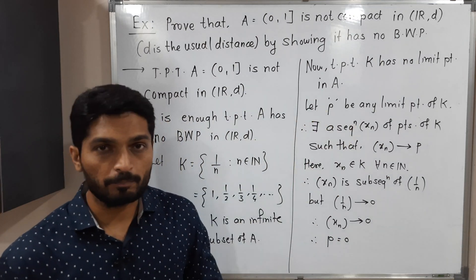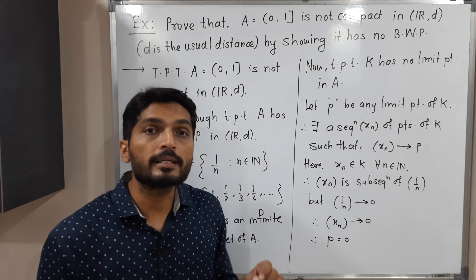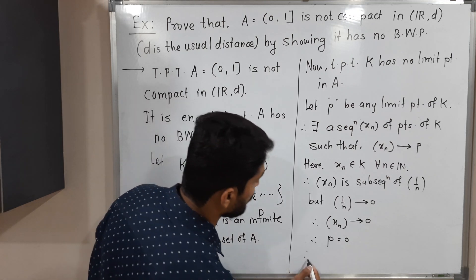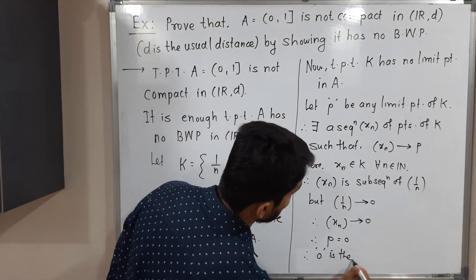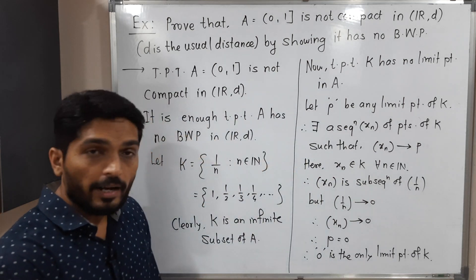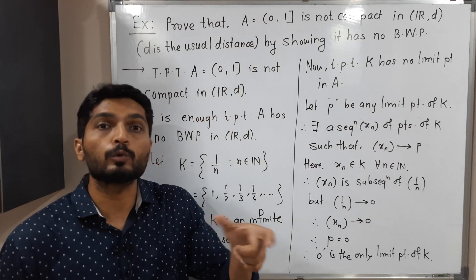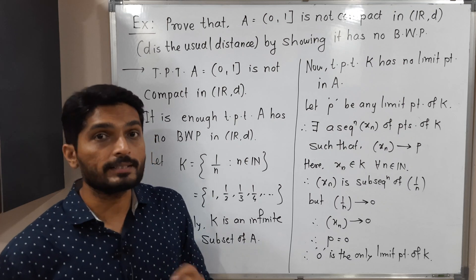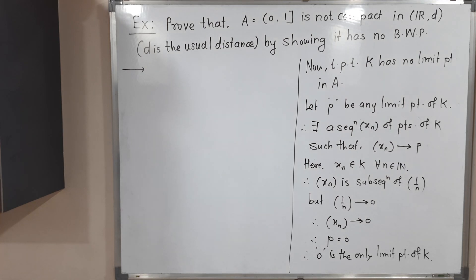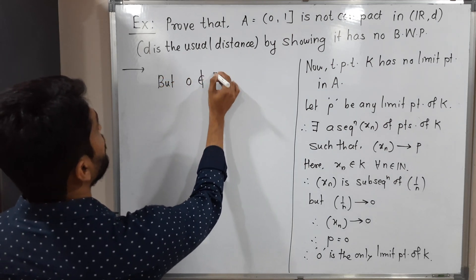We started with any arbitrary limit point P of K and found that P = 0. Therefore zero is the only limit point of K. But zero does not belong to A, since our set is open at 0 and closed at 1, meaning it does not contain the point zero. So zero does not belong to A.